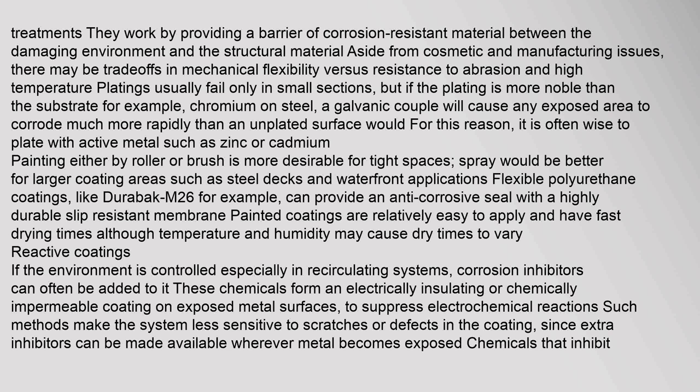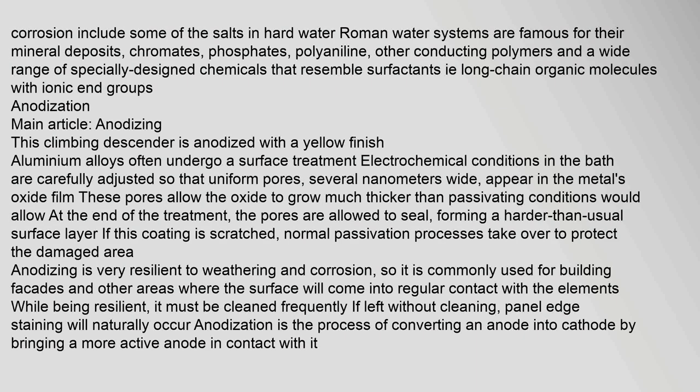Reactive coatings. If the environment is controlled — especially in recirculating systems — corrosion inhibitors can often be added to it. These chemicals form an electrically insulating or chemically impermeable coating on exposed metal surfaces to suppress electrochemical reactions. Such methods make the system less sensitive to scratches or defects in the coating, since extra inhibitors can be made available wherever metal becomes exposed. Chemicals that inhibit corrosion include some of the salts in hard water, chromates, phosphates, polyaniline, other conducting polymers, and a wide range of specially designed chemicals that resemble surfactants — i.e., long-chain organic molecules with ionic end groups.